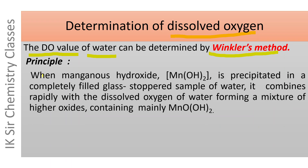When manganese hydroxide — that is Mn(OH)₂ — is precipitated in a completely filled, glass-stoppered sample of water, it combines rapidly with the dissolved oxygen of water, forming a mixture of higher oxides containing mainly MnOOH₂, that is basic manganic oxide.